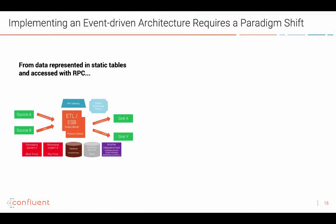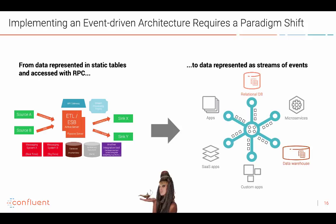Instead of using traditional middleware where you represent data in static tables accessed via request-response, remote procedure calls, or even a queue with push-based messaging, you need to represent data as streams of events. That's what an event streaming platform means. You integrate with all different systems in an event-based way. This does not mean every application has to be event-based — you can still integrate with a relational database, a data warehouse, or a mobile app via request-response. But the key difference is that the foundation, the middleware, is event-based, because then it's easy to implement other paradigms on top of that.